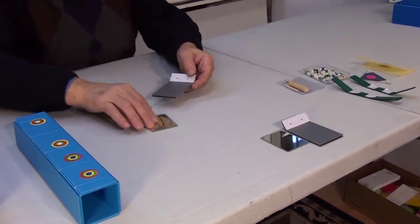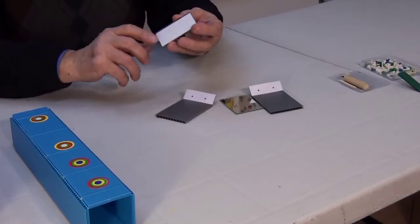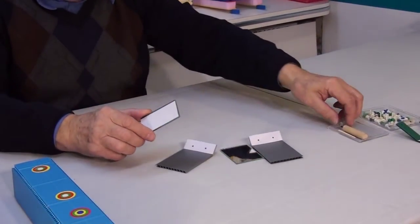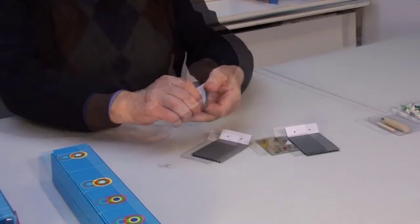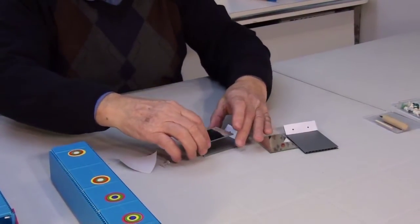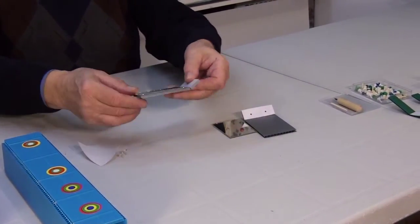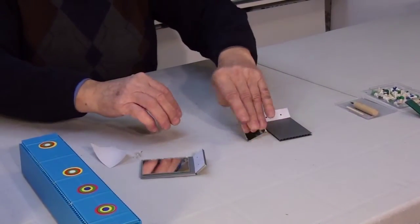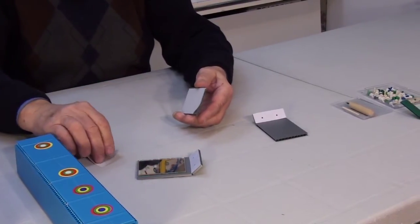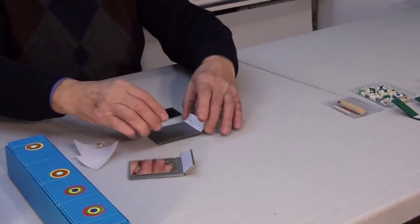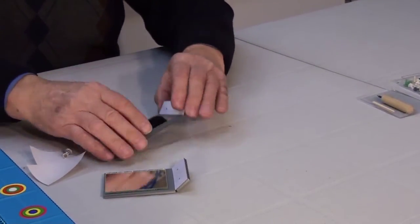Next we will take the mirror holder plates and the mirrors. On this side of the mirrors we have a double-sided tape. Remove the adhesive backing and glue the mirrors to the plates right in the center, just like so. The same is done with the other mirror. The mirrors are now ready.